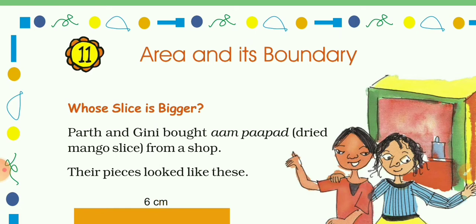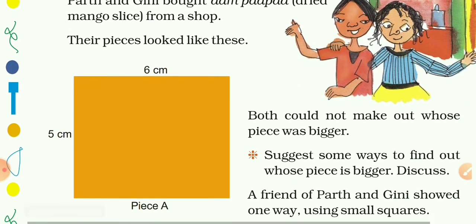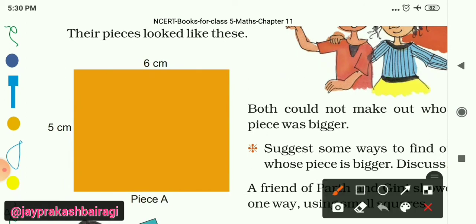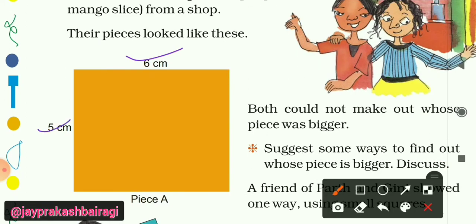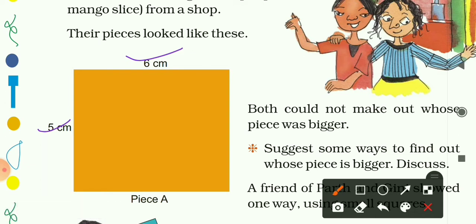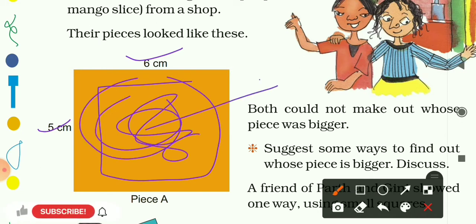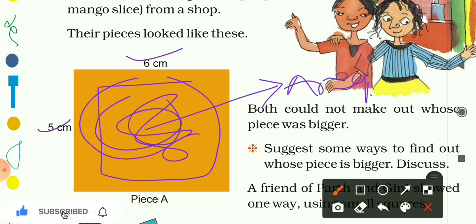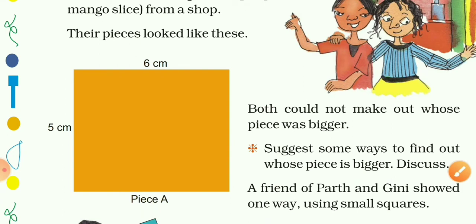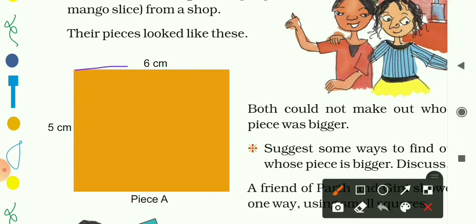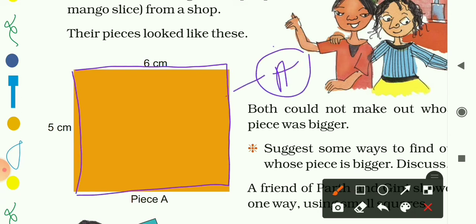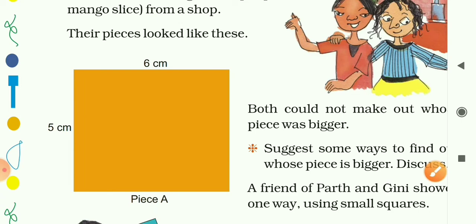Now let's summarize the terms area and perimeter. Here we have a rectangular shape with dimensions 6 cm and 5 cm. You can see this shape is completely filled with orange color — this space is known as its area. The occupied space by any flat surface is known as its area. The length of the boundary of this shape is known as its perimeter.